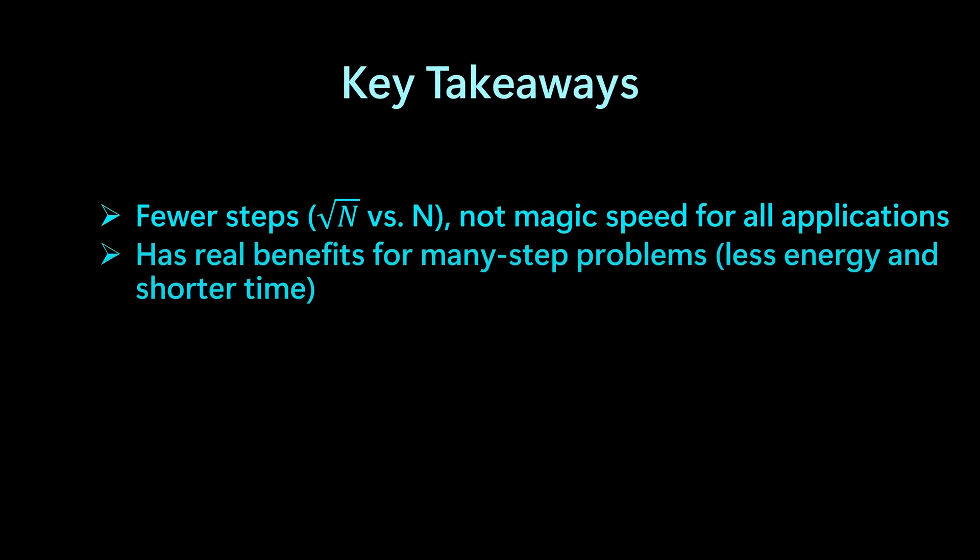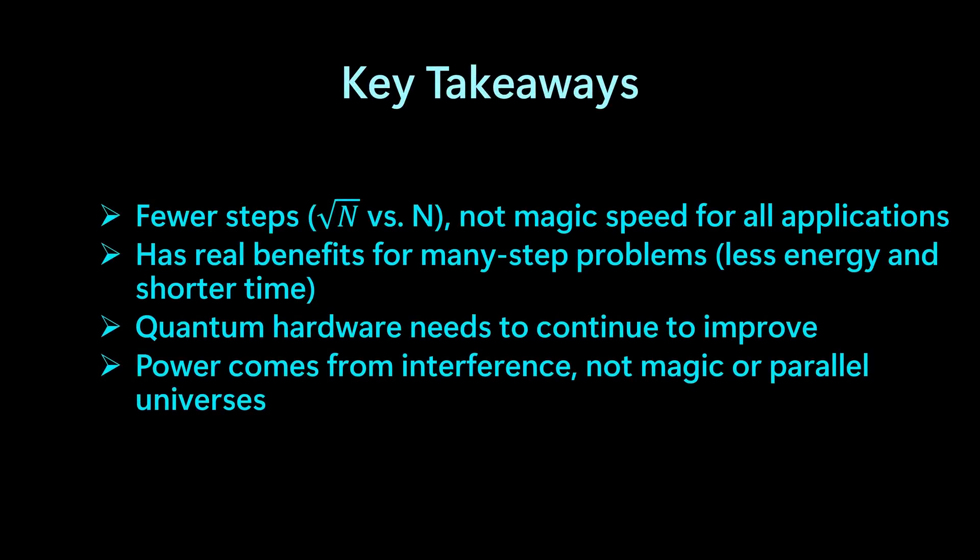So what are the key takeaways here? Quantum computing is all about processing input steps more efficiently via superposition and entanglement. No magic to it. This efficiency leads to less energy per run and much less time for certain large step problems. Quantum hardware must continue to improve by increasing qubit count, longer coherence times, and lower error rates. And the power of a quantum system comes from interference, not parallel universes or magic.